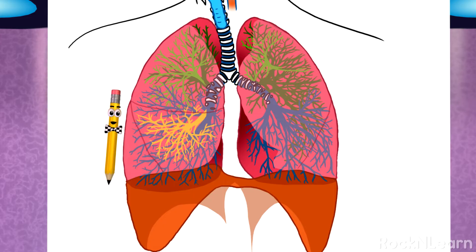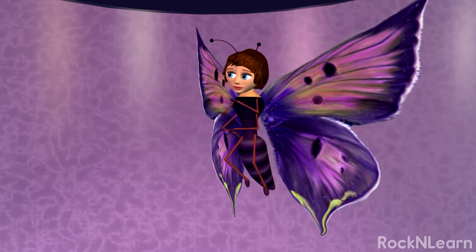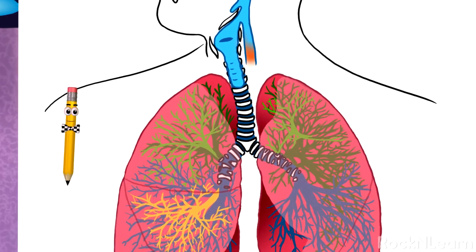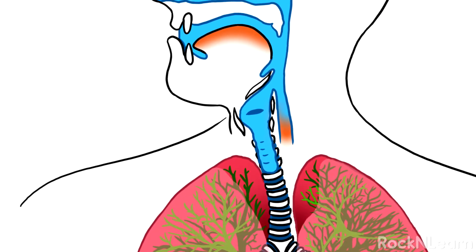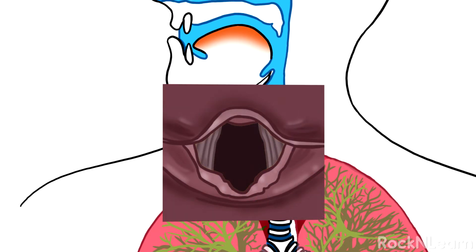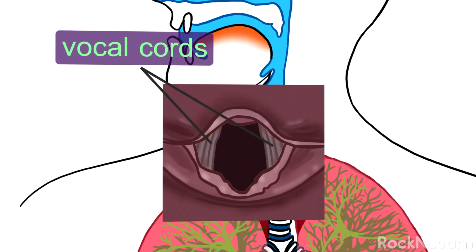Your lungs are important for breathing, but they are also important for talking, which I just love to do! We know, Marco! Above the trachea is the larynx, or voice box. Across the voice box are two pieces of tissue called vocal cords. When the vocal cords are open, air flows through freely.